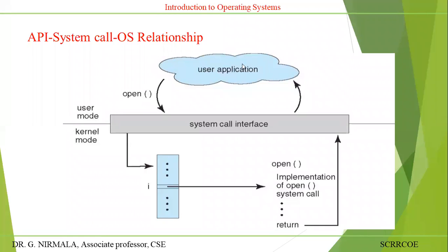In user mode there is a user application. That application will be forwarded to the system call interface, meaning it will be forwarded to the kernel with the help of system calls. 'Open' is a system call. In C language you have predefined functions — those functions are called system calls with respect to the OS perspective. To execute the open system call, the OS will be switched to kernel mode.